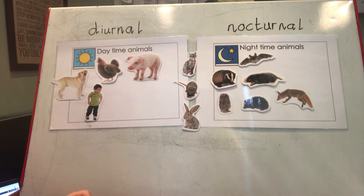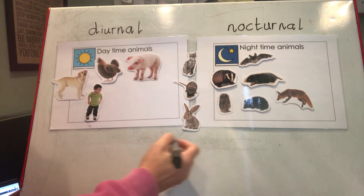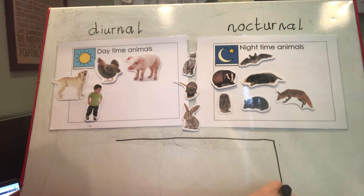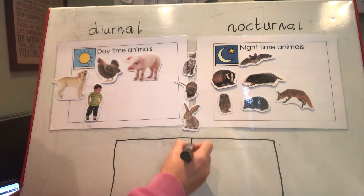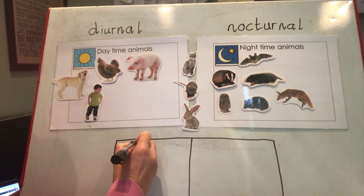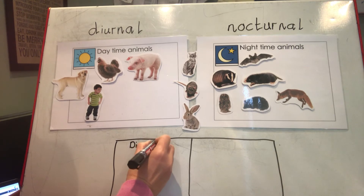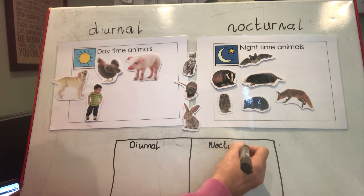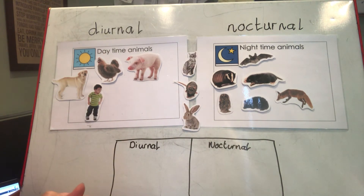Maybe your grown-ups can write down which animals I've got, because then on a piece of paper I'd like you to write a list. A list is a column of words. Draw a line down the middle and you can copy mine — write 'diurnal' on one side and 'nocturnal' on the other. I'd like you to do at least three animals in each column.